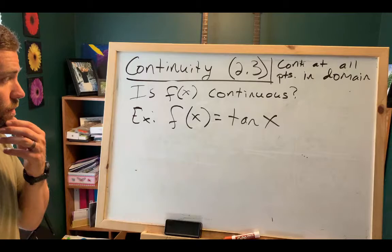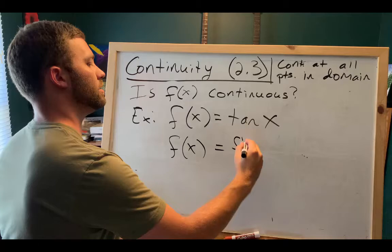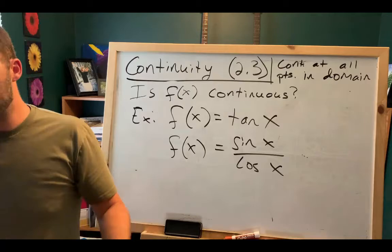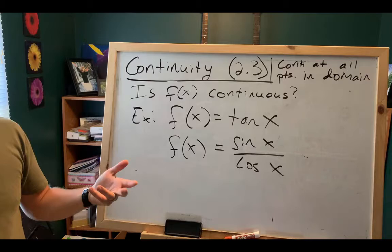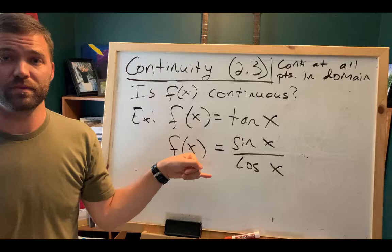Another way to think about this is that tangent is actually the same as sine x over cosine x. For most students, there's no question about whether sine is a continuous function — it's just got the wave that goes on forever in both directions, no breaks in the graph. Of course sine is a continuous function; its domain is all real numbers. Same for cosine. So tangent must be a continuous function because sine is continuous, cosine is continuous, and this is just the quotient of continuous functions. Therefore, tangent must be continuous — yes, it is a continuous function.